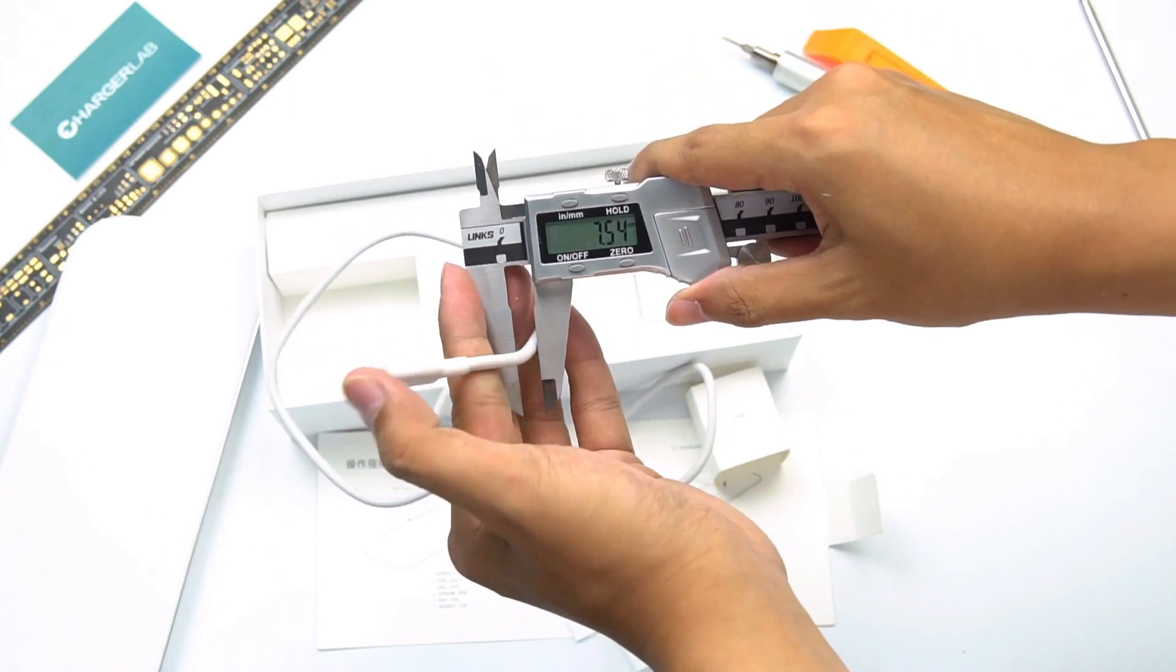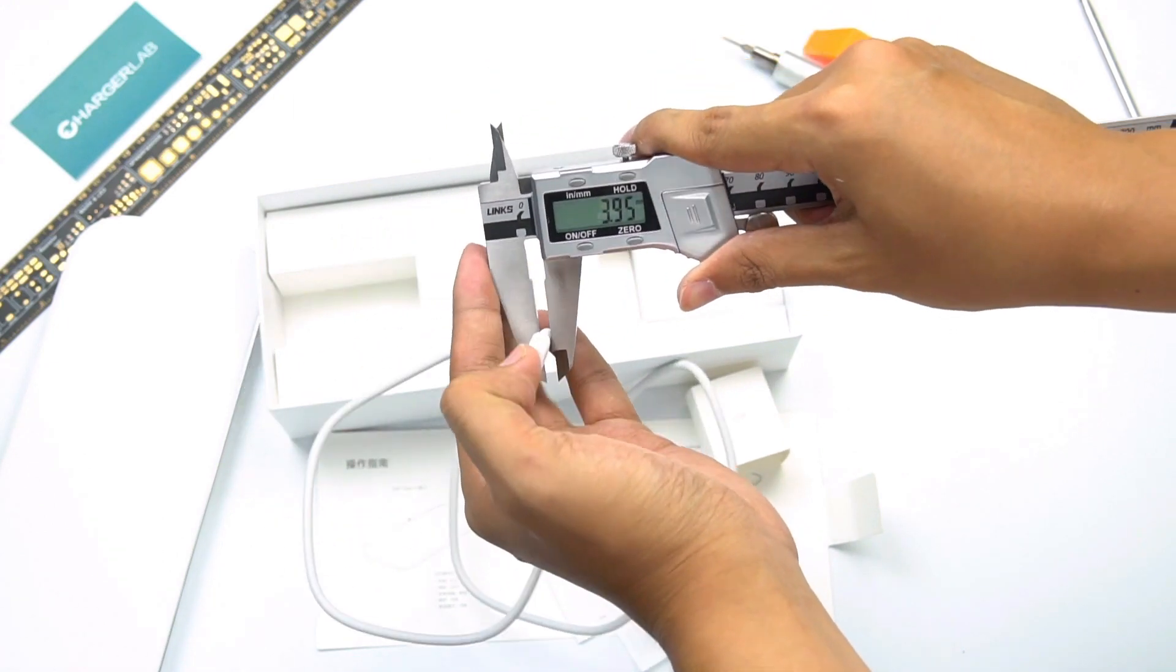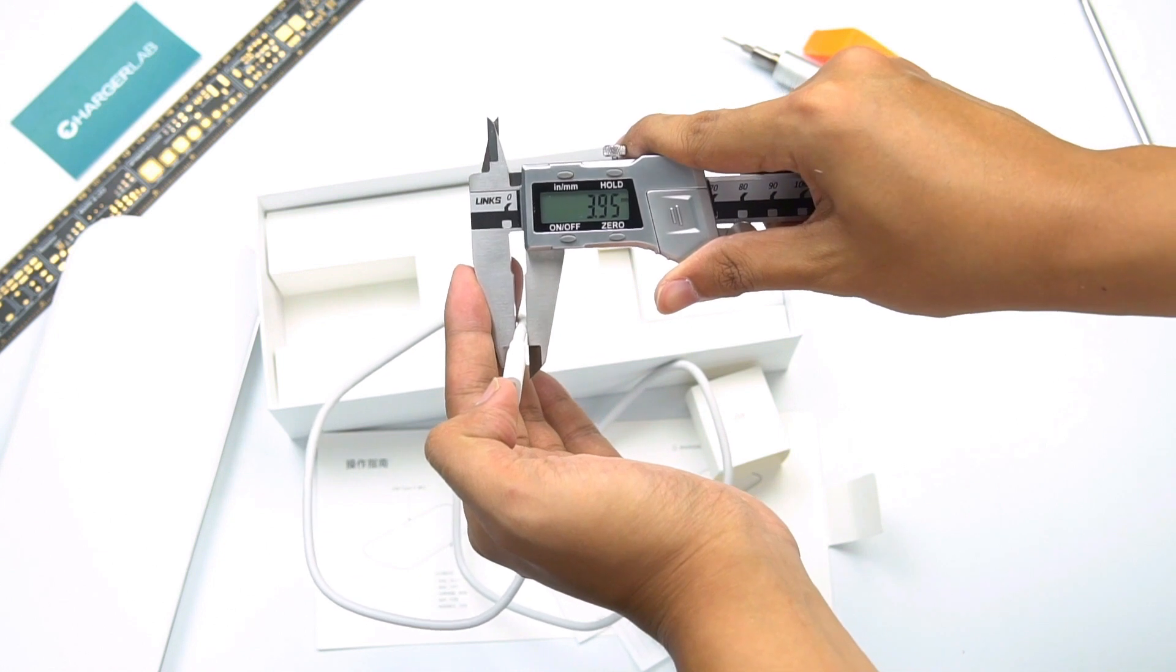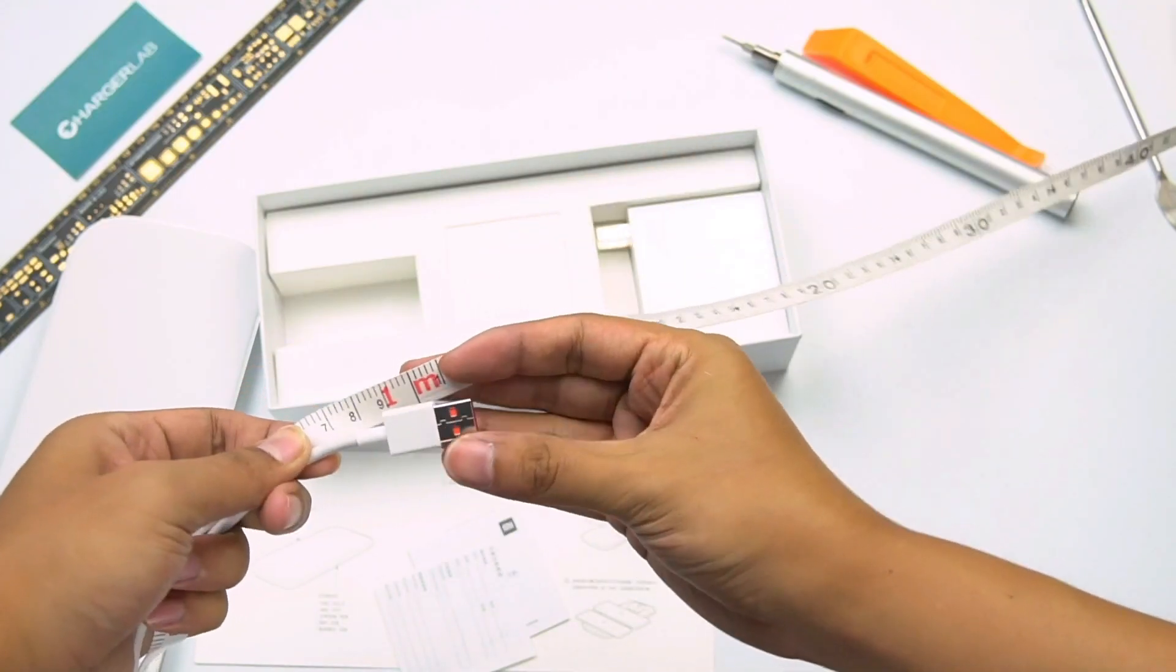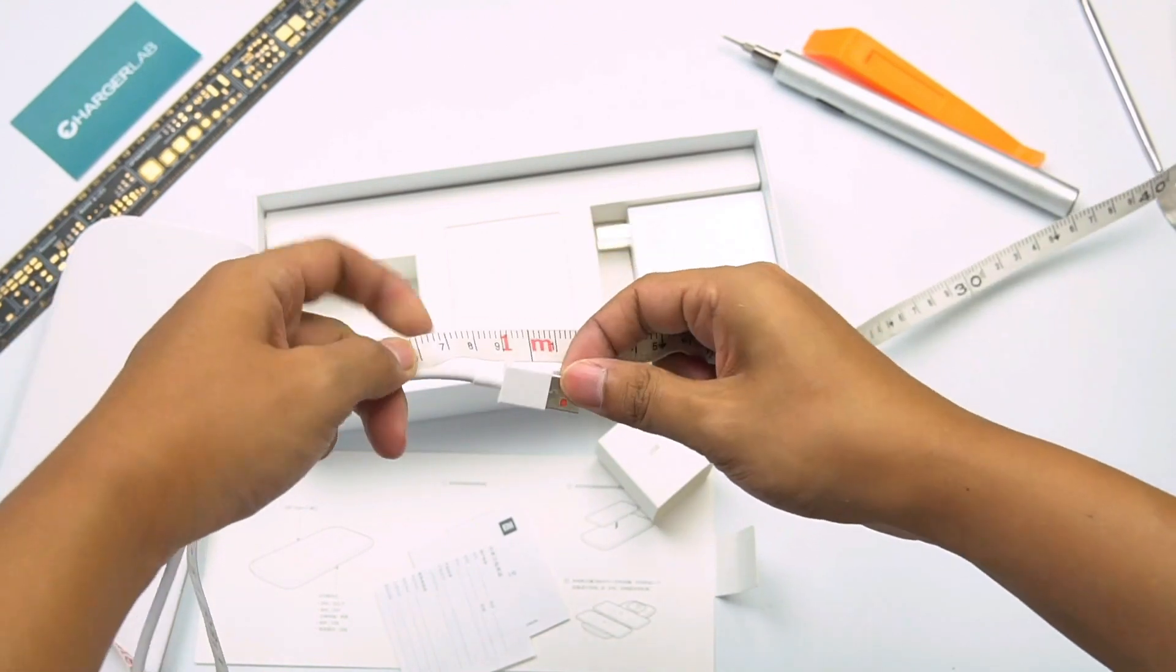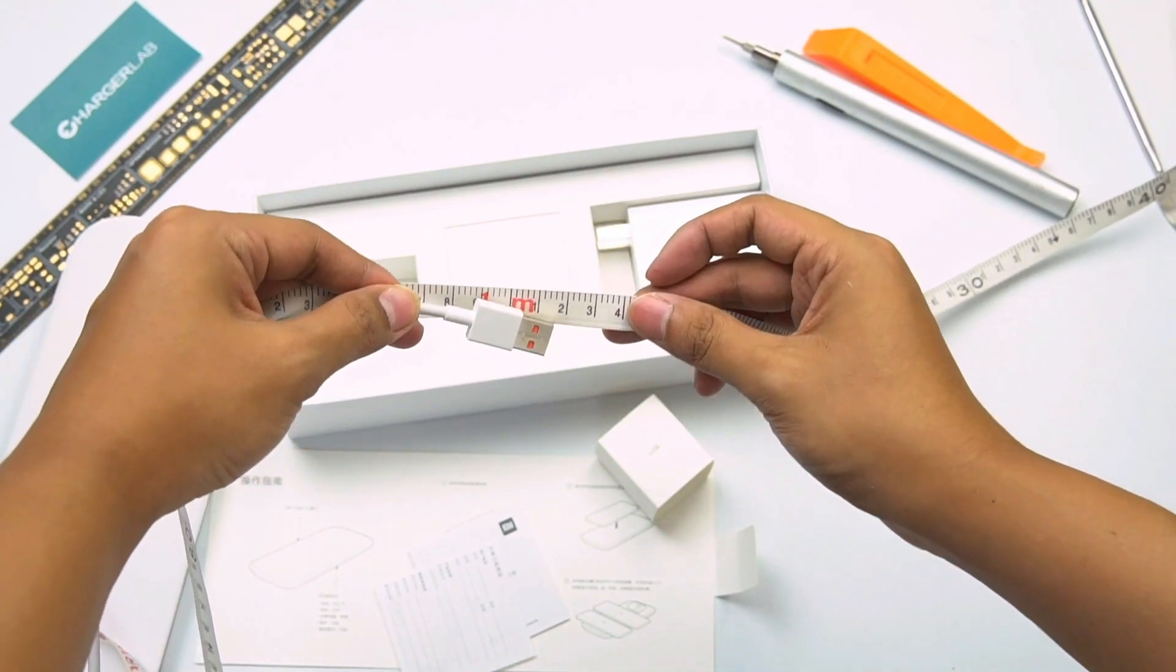And let's test the diameter of the cable. Around 3.9mm. A little bit thicker than others. The entire length is around 102cm. It's enough if you just use it on the desk.